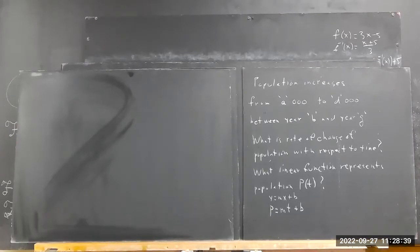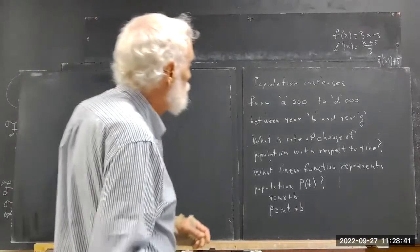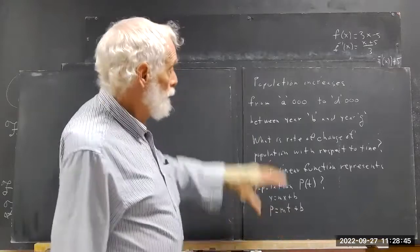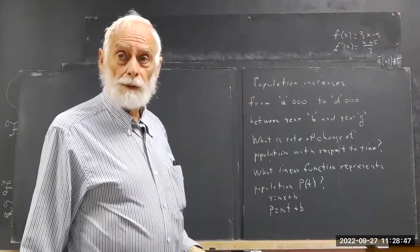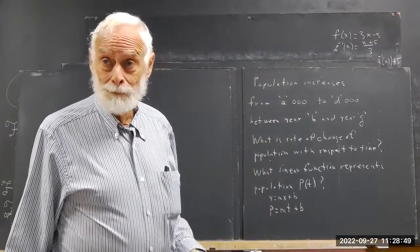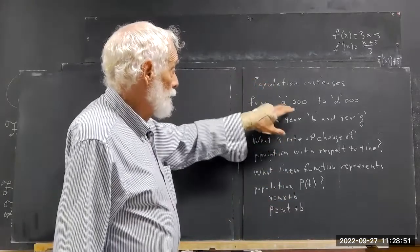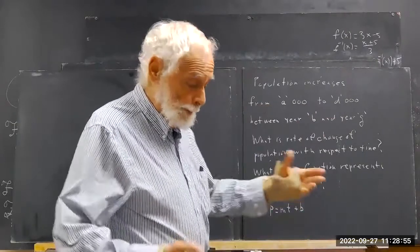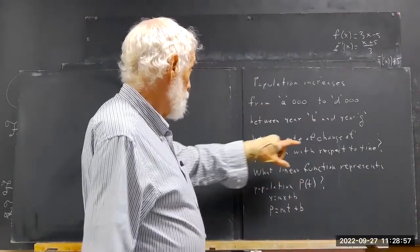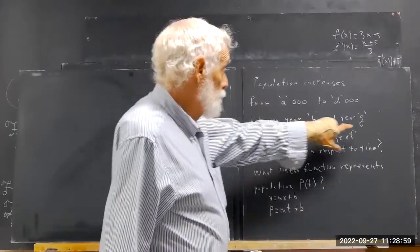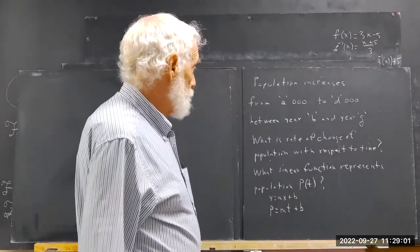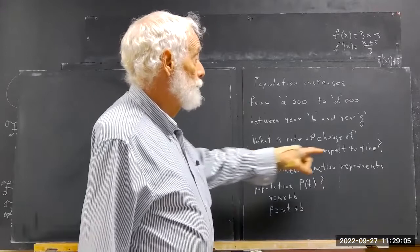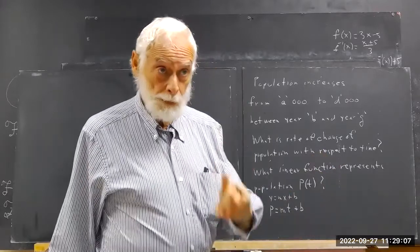OK, now, y'all seem to be pretty well prepared for this. Everybody pretty quickly and easily got the rate of change. So we have a problem: population increases from A thousand to D thousand, between year B and year G. What's the rate of change of population with respect to time? That's the first question.